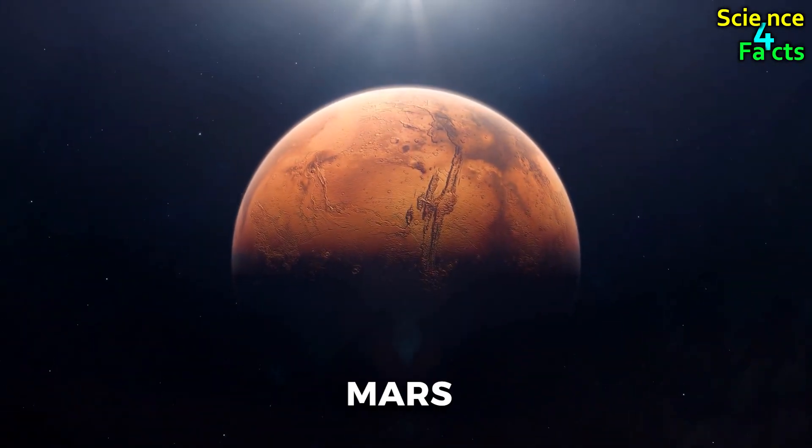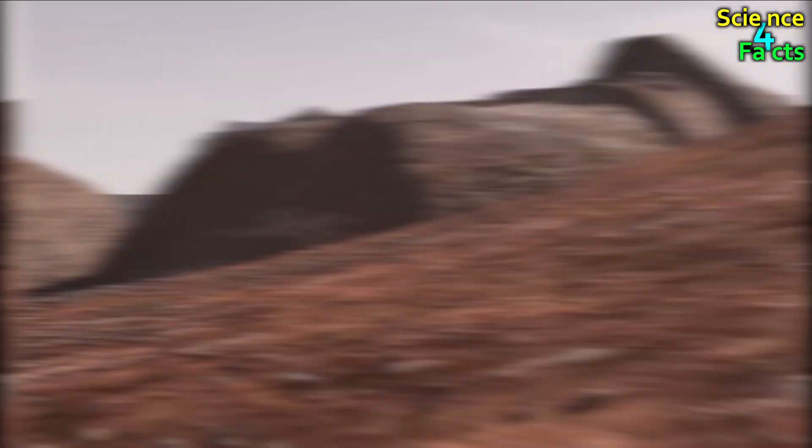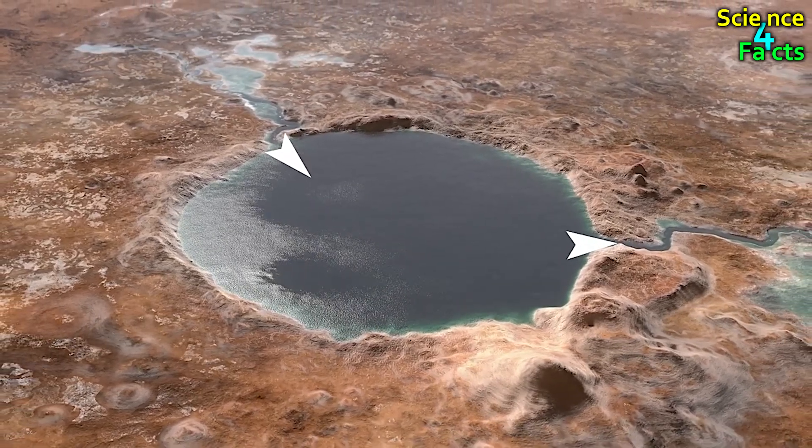Next, we go to Mars, our neighbor, and geographically very similar to our Earth. It is understood that Mars, which today is dry and just like a desert, had a similar situation to Earth hundreds of thousands of years ago, and water fell as rain.